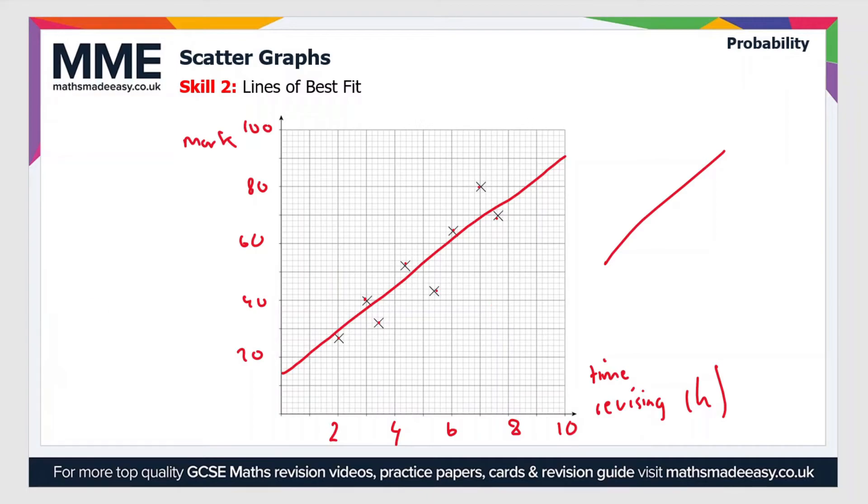We could use our line of best fit to predict the mark of someone who spent a certain amount of time revising, and vice versa. Let's say someone spent five hours revising. We can draw a line from five hours up to our line of best fit and then draw across to the y-axis to work out the mark that they might have got. Here you can see that the mark is about 53 to 54, so we could say that this person achieved a mark of approximately 54.